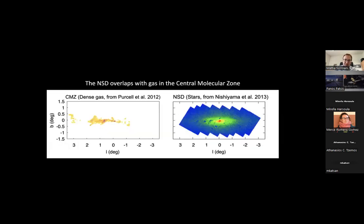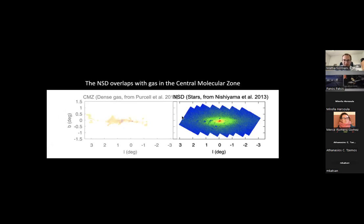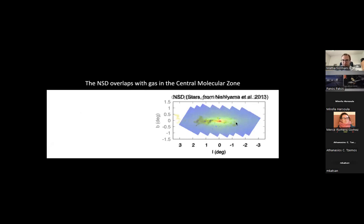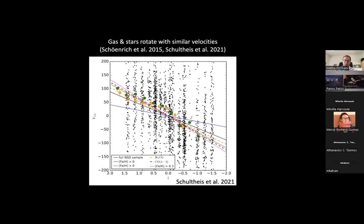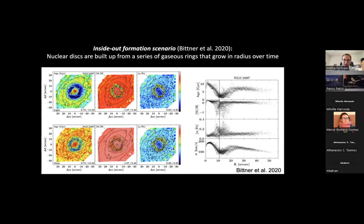The connection between gas and stars is clear: the dense gas in the CMZ overlaps perfectly with the size of the nuclear stellar disk — the nuclear stellar disk is the product of star formation in this gas. The nuclear stellar disk rotates, with gas and stars showing similar velocities, strengthening this connection. The most plausible evolutionary scenario is the inside-out formation scenario proposed by Böker et al. for external galaxies: nuclear disks are built up from a series of gaseous rings that grow in radius over time.